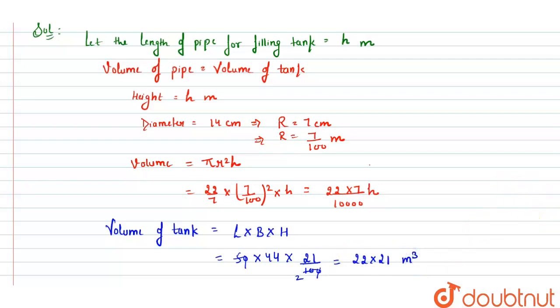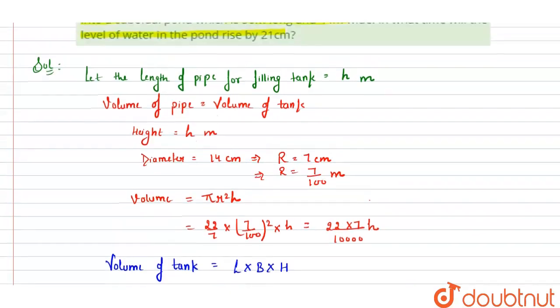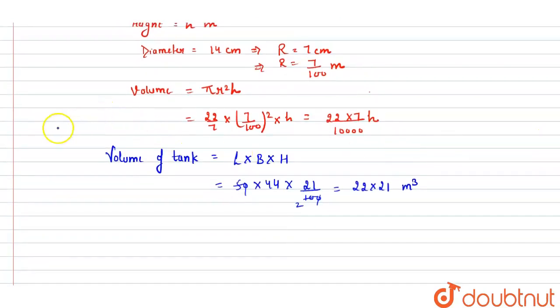Now volume of pipe equals volume of tank, that means we can equate 22 into 7 divided by 10,000 into H equals 22 into 21.